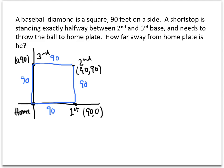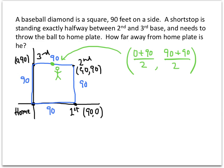Since the shortstop is exactly halfway between second base (90, 90) and third base (0, 90), we use the midpoint formula: the average of the x-coordinates is (0 + 90) / 2 = 45, and the average of the y-coordinates is (90 + 90) / 2 = 90. So the shortstop is standing at the point (45, 90).